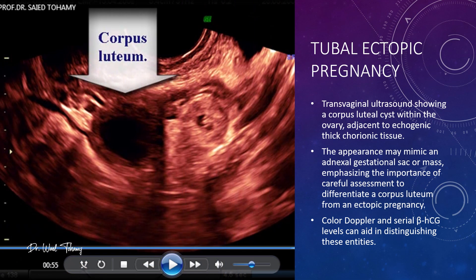Take a look at this transvaginal ultrasound. Here we see a corpus luteum cyst within the ovary right next to echogenic thick chorionic tissue. At first glance, this can mimic an adnexal gestational sac or mass, which is why careful assessment is key. Look at the wall and the internal echoes — a corpus luteum often has a thicker wall and less defined internal content compared to an ectopic sac. Color Doppler and serial beta-HCG levels are your friends here, helping you tell the difference between a benign ovarian finding and a true ectopic pregnancy.